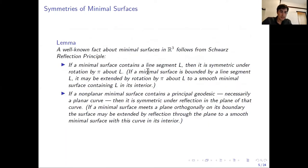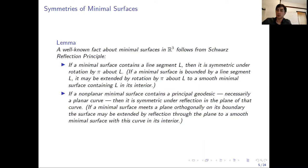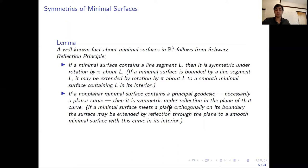The next well-known fact is the Schwarz reflection principle for minimal surfaces. If a minimal surface contains a line segment L, then it is symmetric under rotation by 180 degrees around that line. If a minimal surface is bounded by a line segment, then we can extend it by rotation by 180 degrees — if we have an arc boundary, we can extend it easily. Similarly, if a minimal surface meets a plane orthogonally, it is invariant under reflection in that plane, and if it meets a plane orthogonally on its boundary, the surface can be extended by reflection.